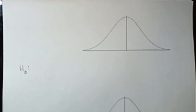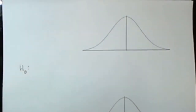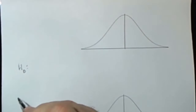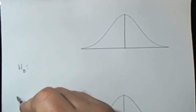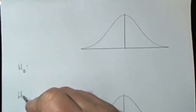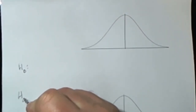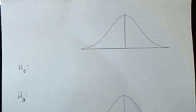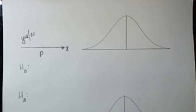In this video, we're going to look at how to find the p-value in a hypothesis test. We'll discover that that has a lot to do with what the alternative hypothesis is — the way you calculate the p-value depends on what the alternative hypothesis is.